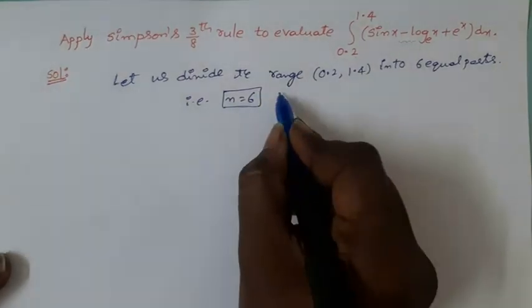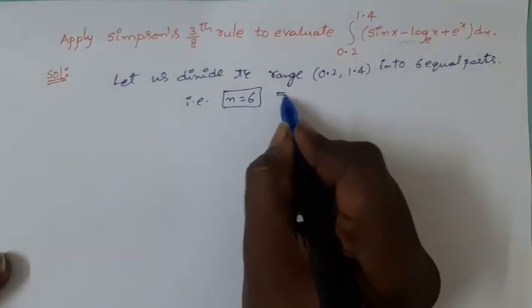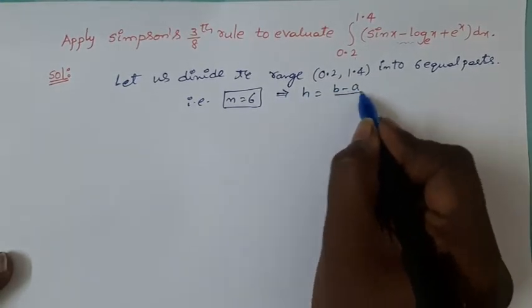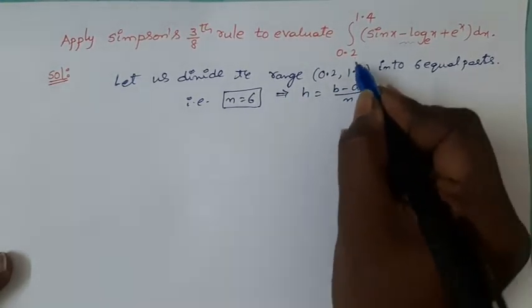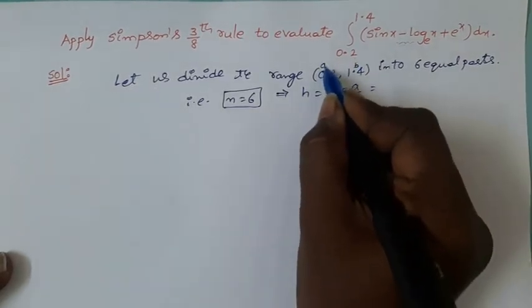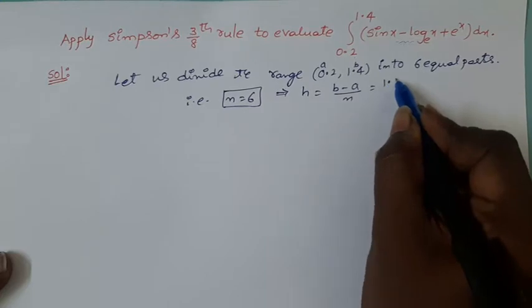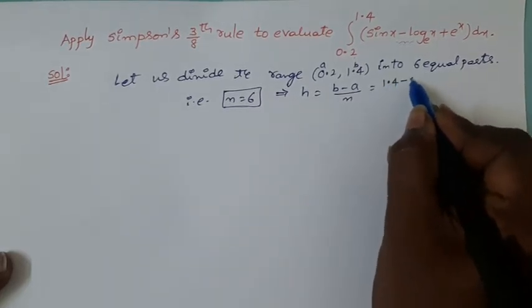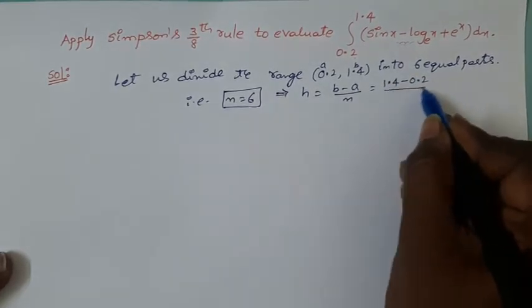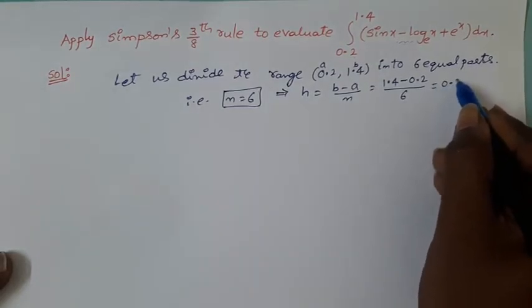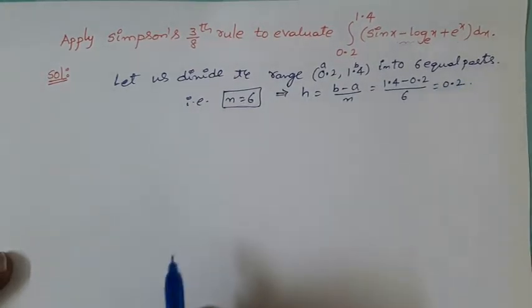Now we have to find the h value. The value of h equals b minus a by n. b is the upper limit, a is the lower limit. So 1.4 minus 0.2 by 6, you will get 0.2 by using scientific calculator.